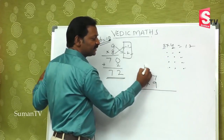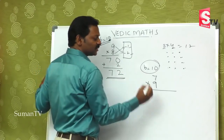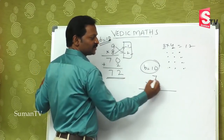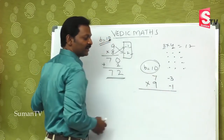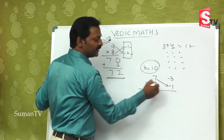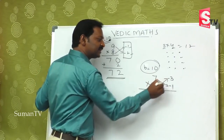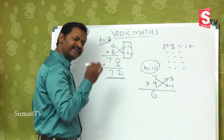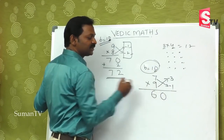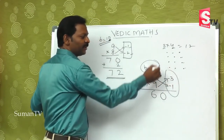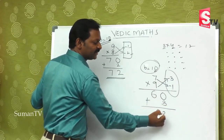Now for 7 multiplied by 9. This base number is 10, because 7 is close to 10 and 9 is close to 10. So 10 minus 3 gives minus 3 for 7, and minus 1 for 9. Then 7 minus 1 is 6 — or 9 minus 3 is 6 — that is the first part. Next, minus into minus is plus, so 3 times 1 is 3. The answer is 63.